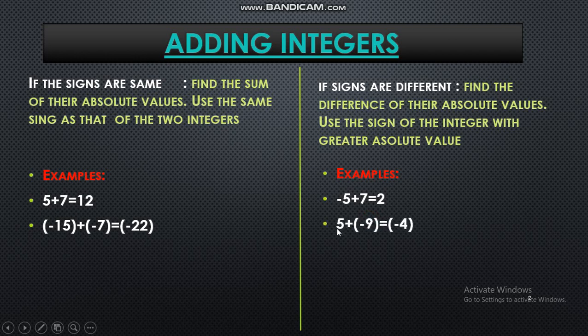Let's have another example. 5 plus negative 9. Now different signs means first do the subtraction of the numbers like 9 minus 5 is 4. Now who is bigger, 9 or 5? Of course 9 is bigger which is negative. So my answer is also negative 4. Clear?